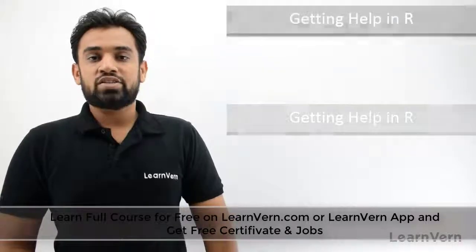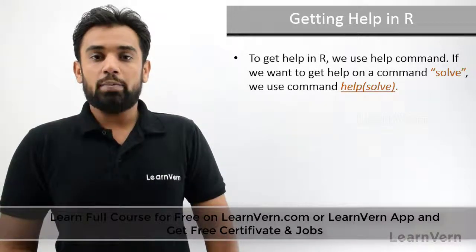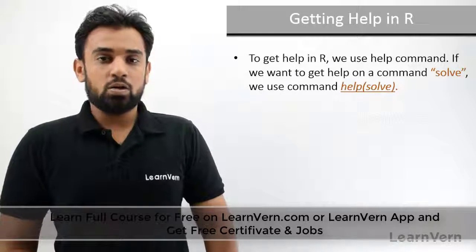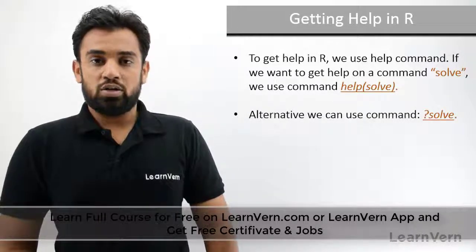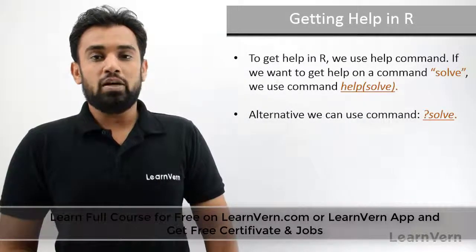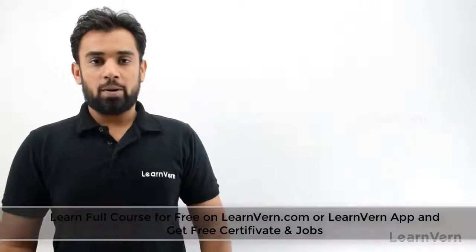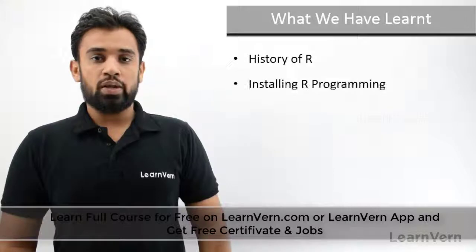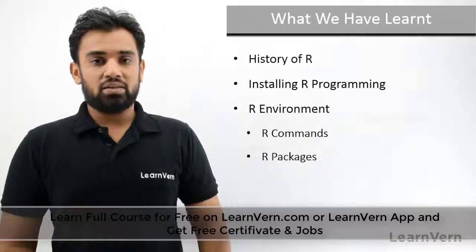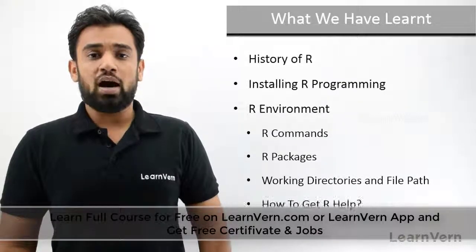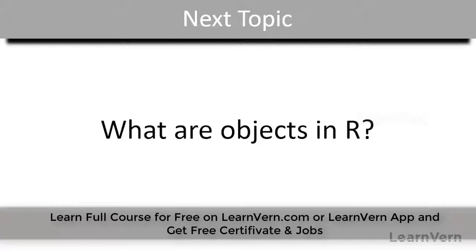The last topic is getting R help. When you are stuck with any function, you can type help(functionName) and you will be able to see the help documentation — what the operators are and the parameters of that function. Alternatively, you can type a question mark before a function name and it will display the same help. In this chapter we covered the history of R, installing R, and the R environment — including R commands, packages, working directories and paths, and how to get R help. The next topic will be objects in R.